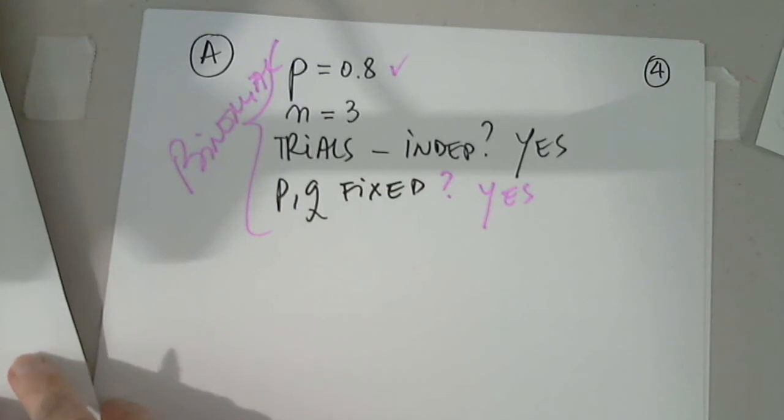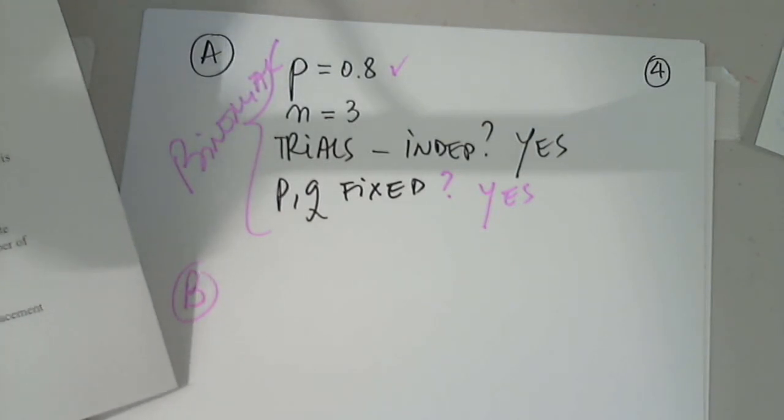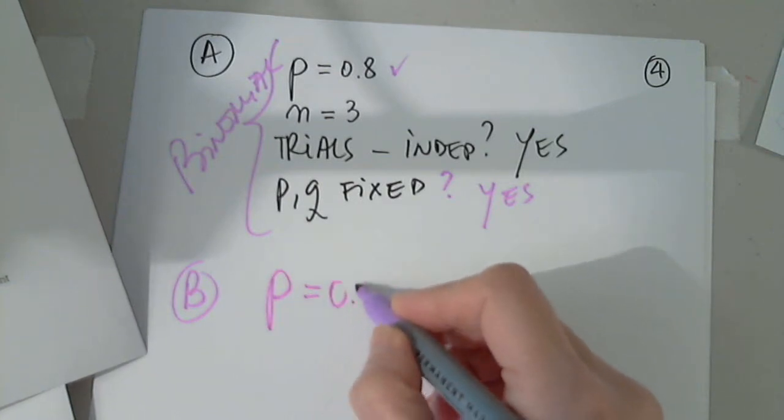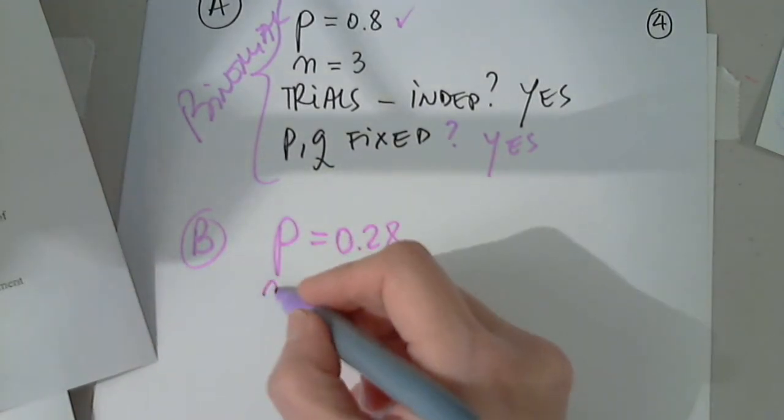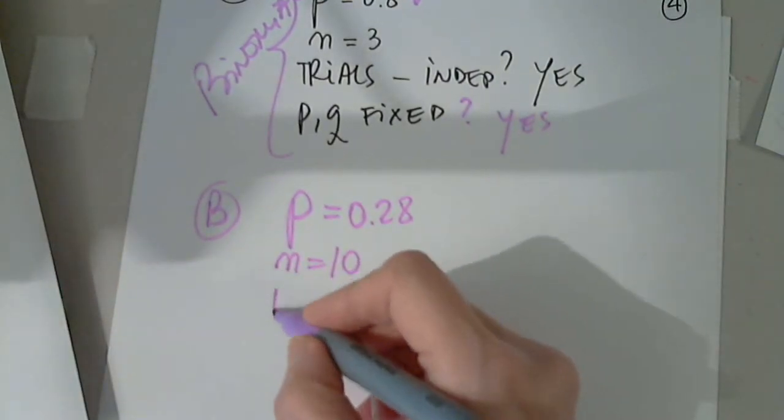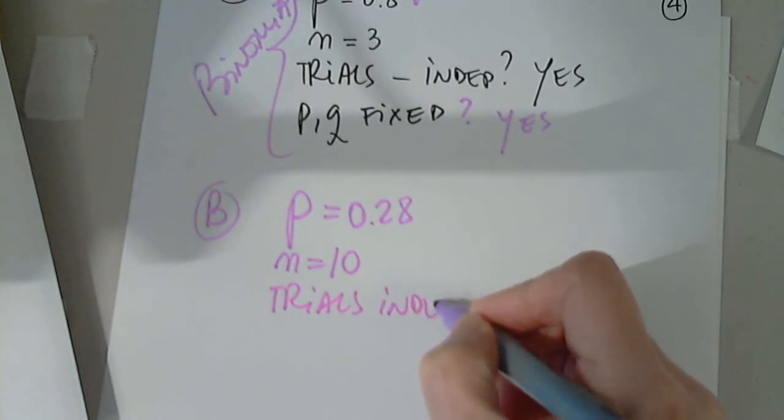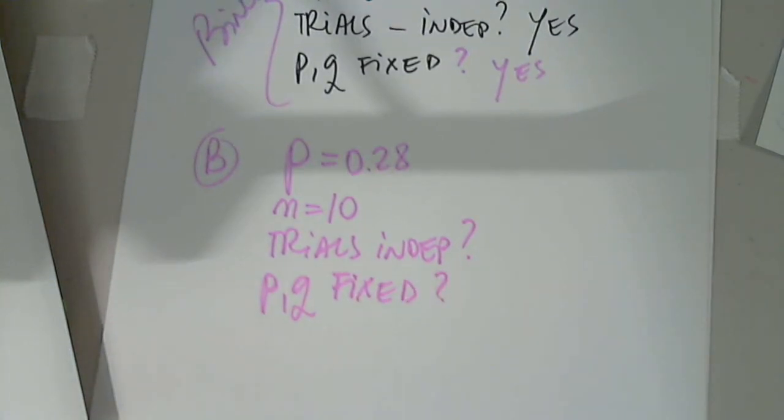Let's read part B. According to the recent polls, 28% of Americans state that chocolate is their favorite flavor of ice cream. So the probability is 0.28. Suppose a simple random sample of size 10, OK, is obtained and the number of Americans who chose chocolate as their favorite ice cream is recorded. Are the trials independent? Are P and Q fixed from trial to trial? If you say yes to these two, then we will consider this a binomial experiment. Yes and yes.